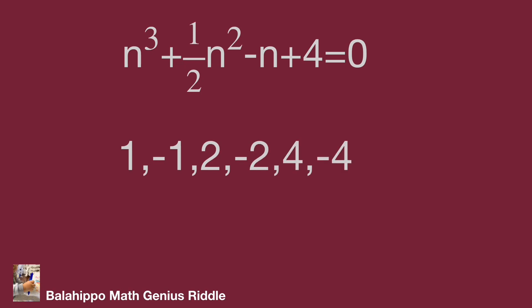There are 1, minus 1, 2, minus 2, 4, and minus 4. We have the term 1 over 2 n squared in this equation. If 1 over 2 n squared is an integer, then 1 and minus 1 are not the right values.